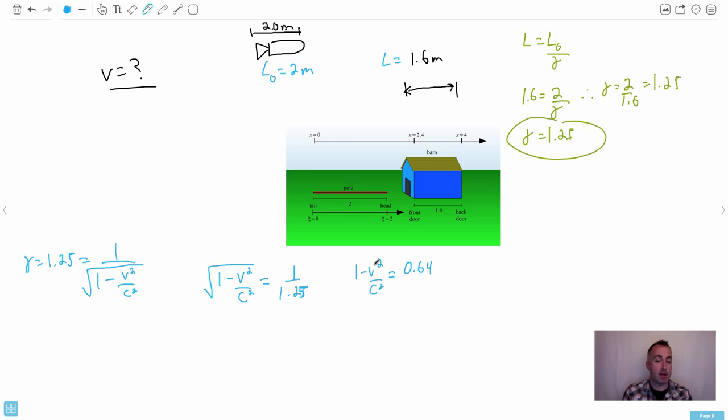Now we're talking. I can take my minus V squared over C squared, I can move it to the right, make it positive, and I can make my 0.64 move it to the left. So that might be a good idea. Let's see here. So then I could do a 1 minus 0.64, that should be 0.36. That's going to equal V squared over C squared.